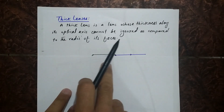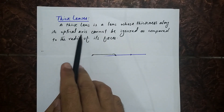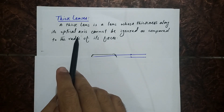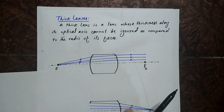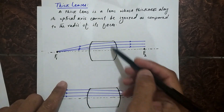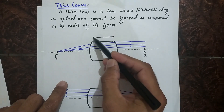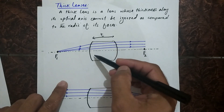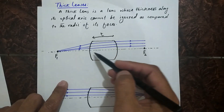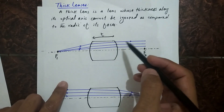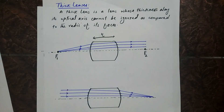Hello students. Today we are going to study about thick lenses. A thick lens is a lens whose thickness along its optical axis cannot be ignored as compared to the radii of its faces. For example, if we have a thick lens shown by the black lines, it has a thickness t which cannot be ignored as compared to the radii of both its faces.